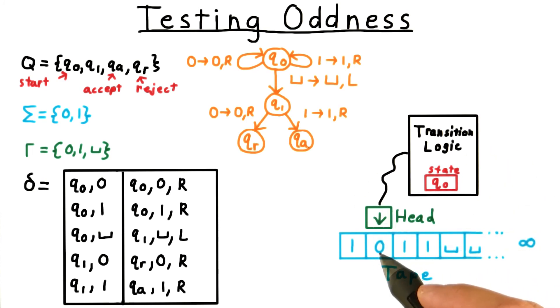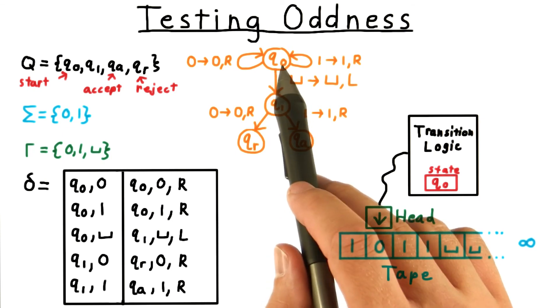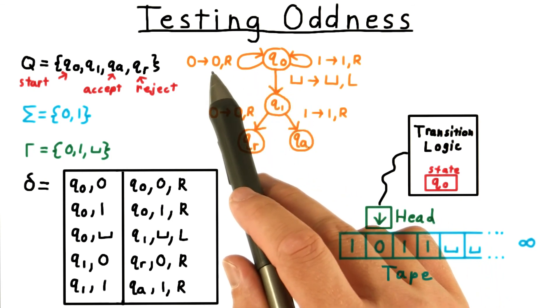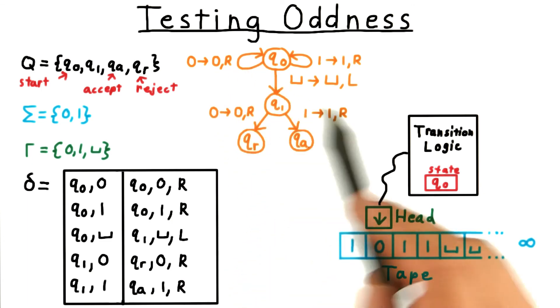In the next step, we'll read a 0. Consulting the transition diagram, we see that this means that we should leave the 0 alone, and move the head to the right again, and stay in state q0.